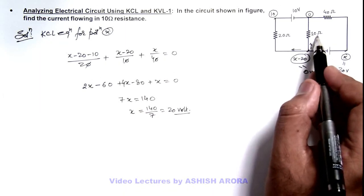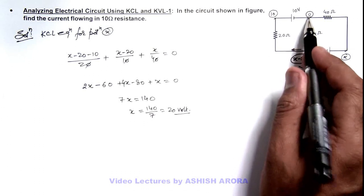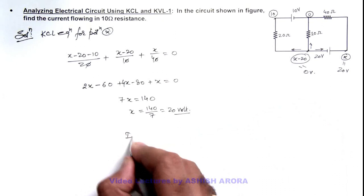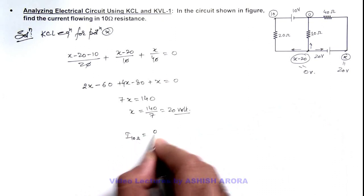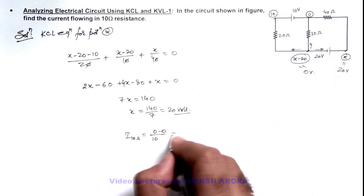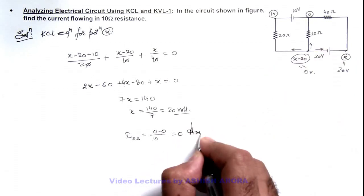Across this 10 ohm resistance we can see one side potential is zero, other side also it is coming out to be zero. Then current through 10 ohm resistance will be zero by 10 or zero minus zero by 10. So as there is no potential difference, the current will be zero. That is the answer to this problem.